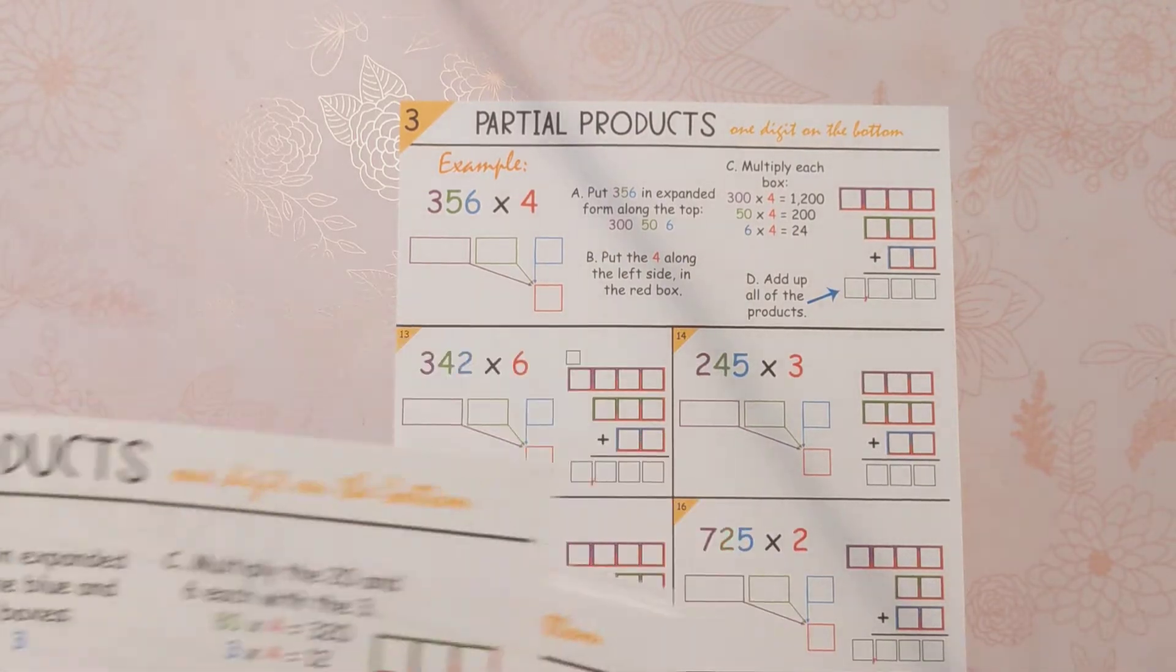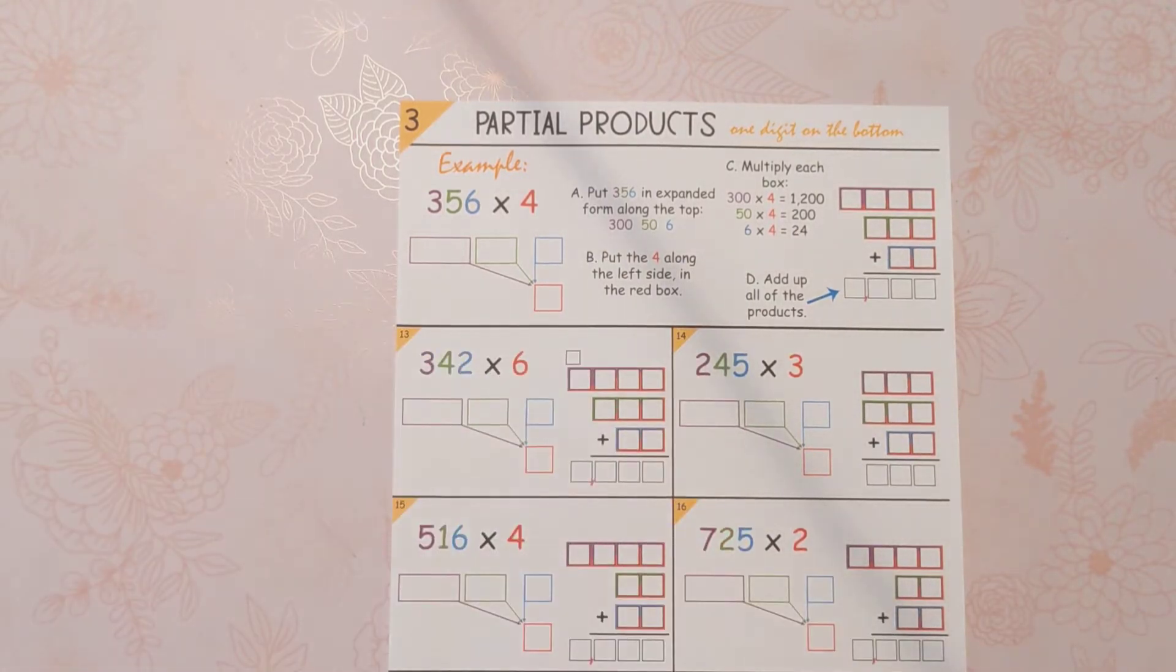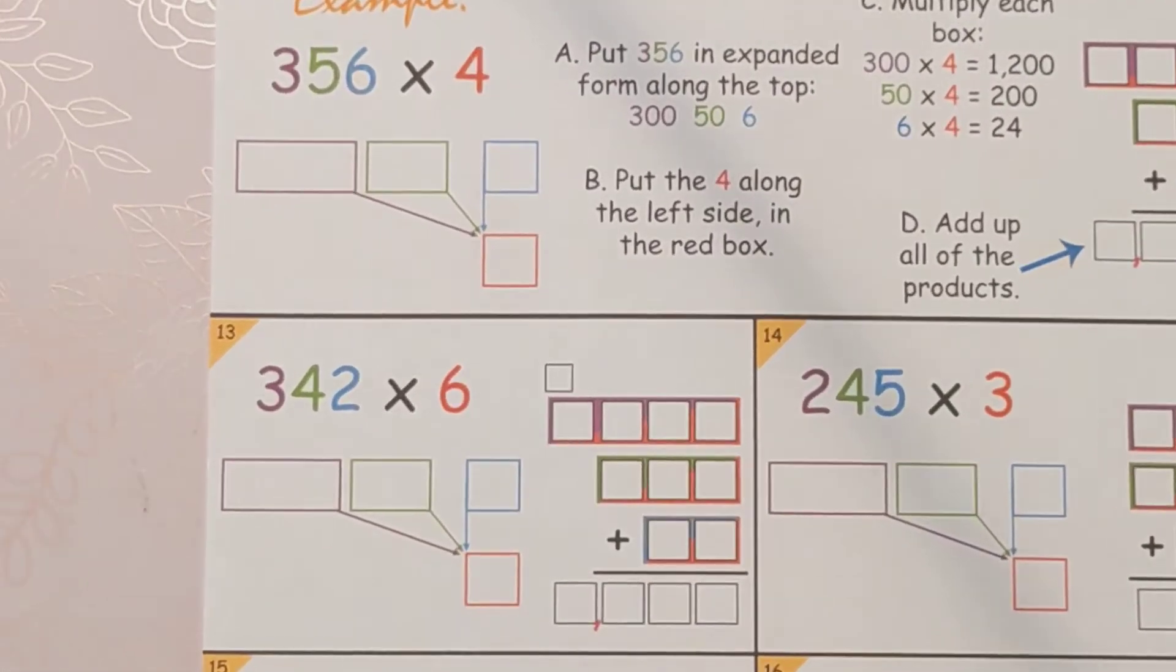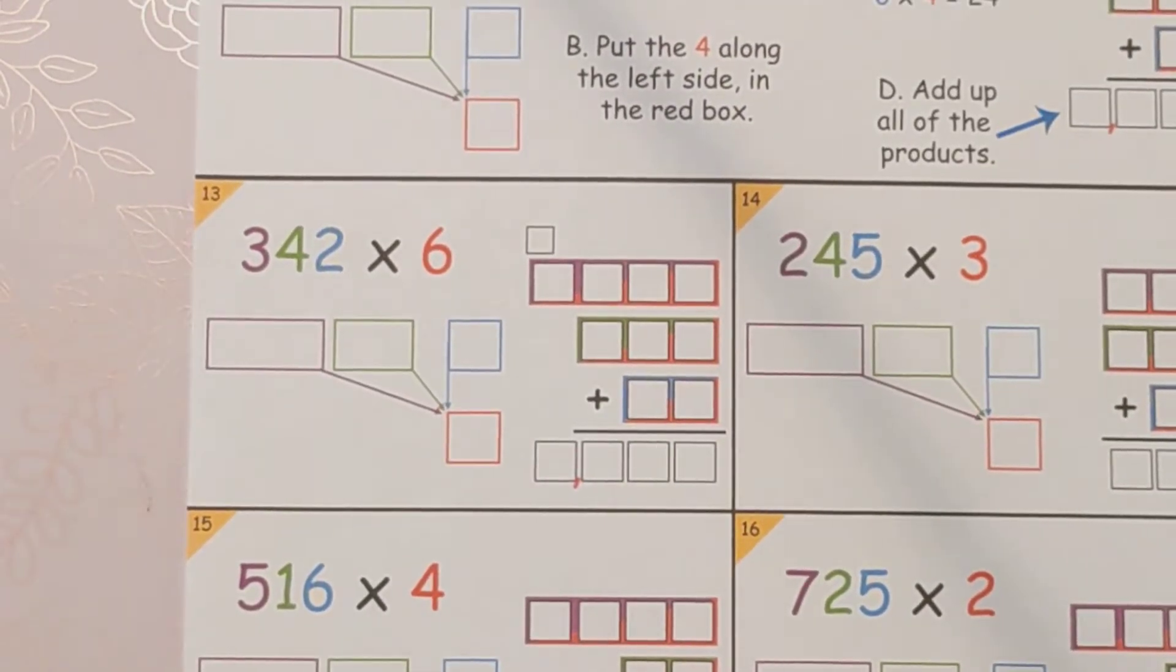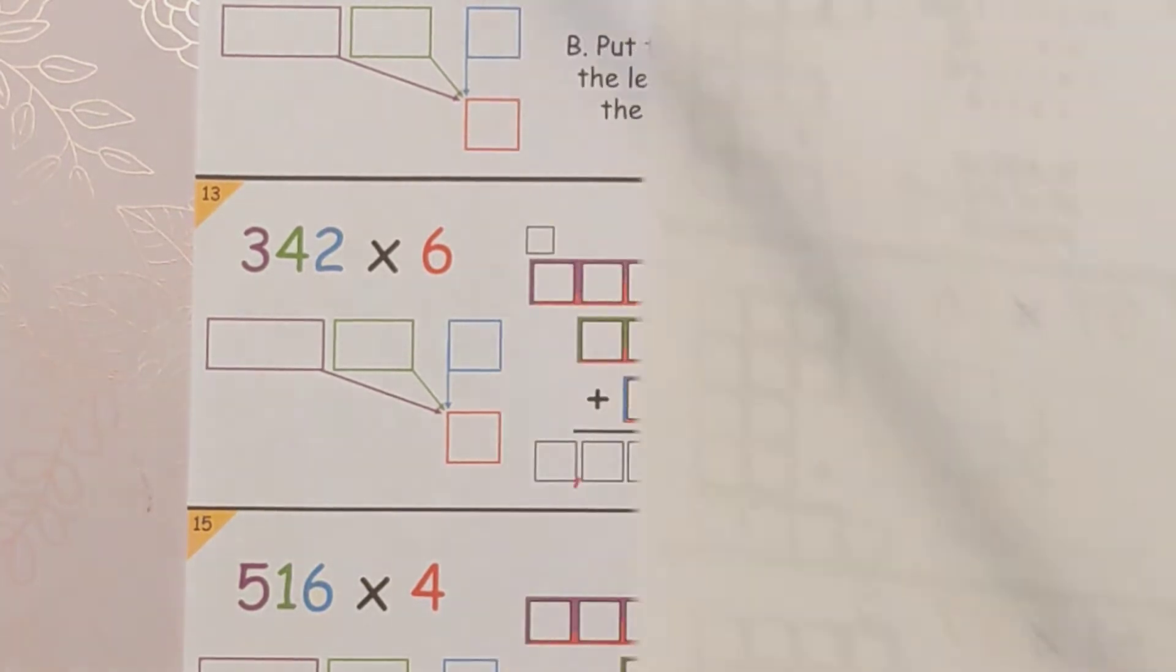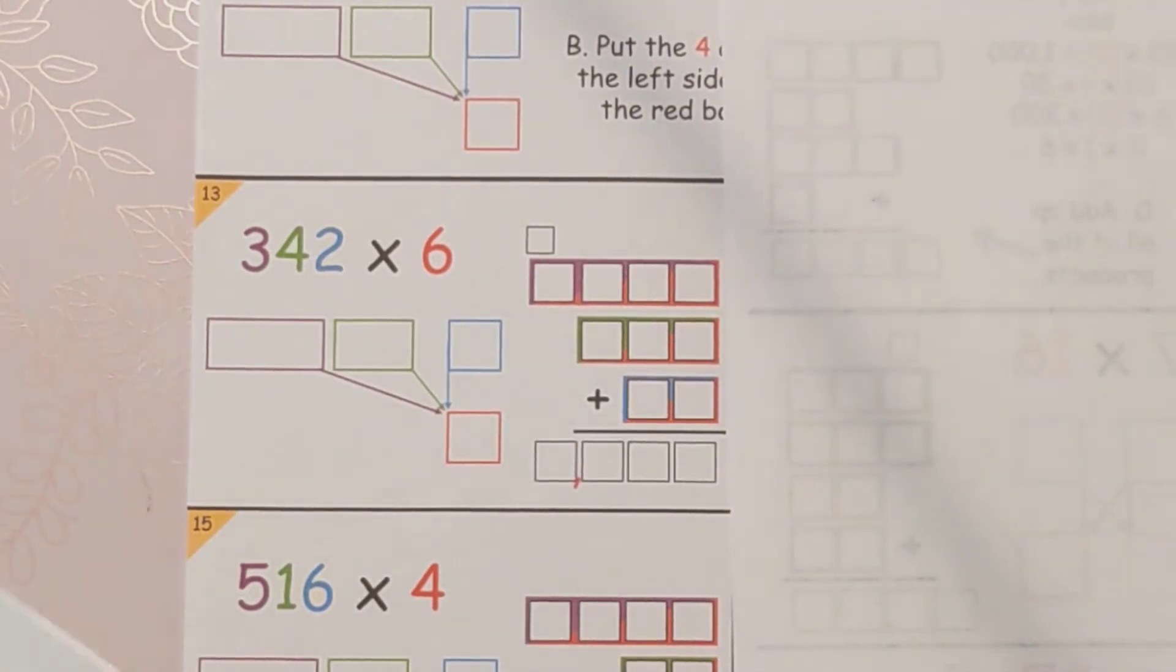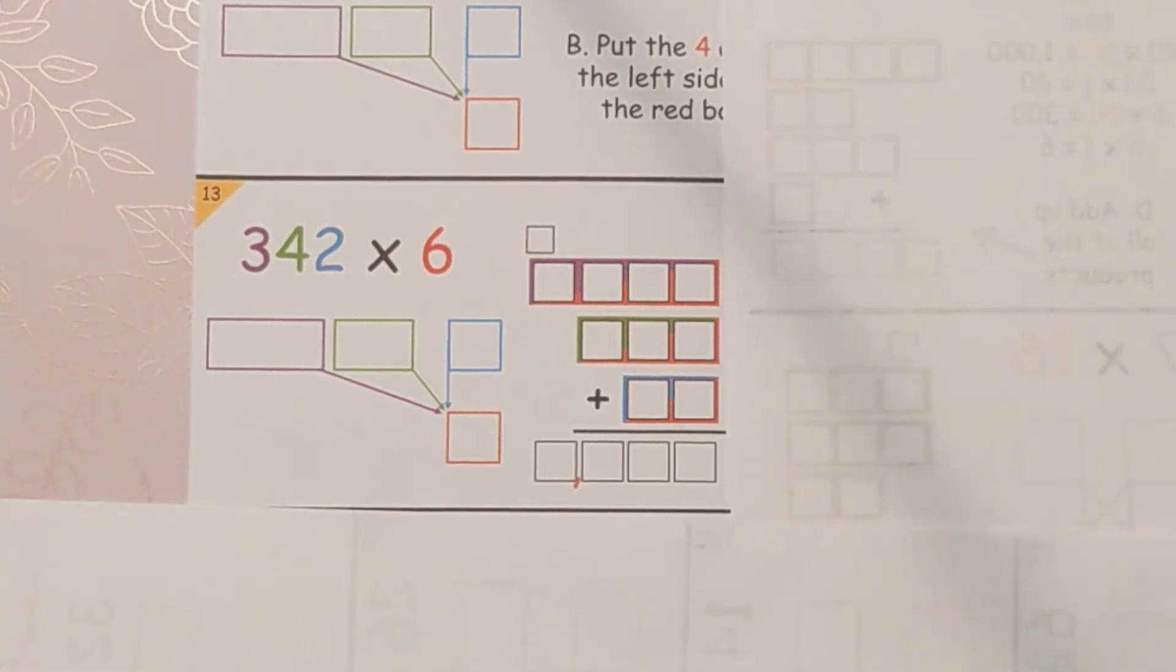Today we're doing three digits times one digit, and we're going to do 342 times six. Partial products just means you're taking that big number of 342 and cutting it into parts, and then you're just multiplying each of those parts by six instead of doing it all together.